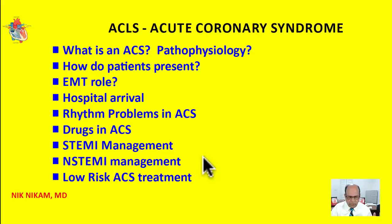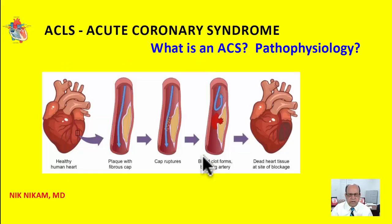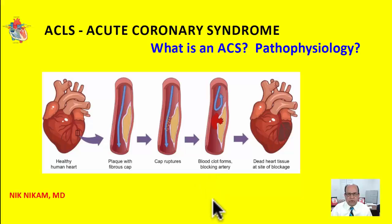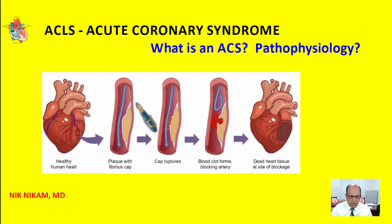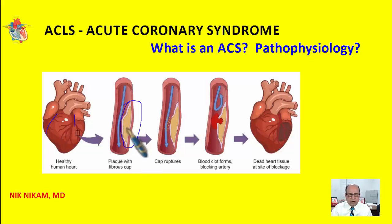Let us begin with the pathophysiology that leads to acute coronary syndrome. The heart is supplied by the left coronary artery and the right coronary artery, which supply oxygen to the heart muscle. Over a course of 20 to 30 years, plaques build up inside the coronary arteries, leading to a mounting effect encroaching onto the lumen.